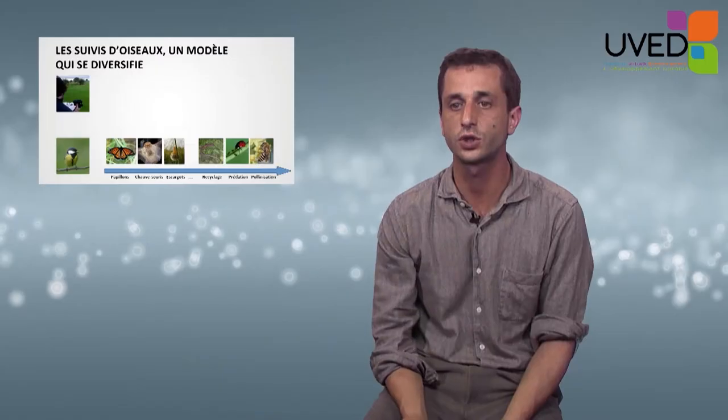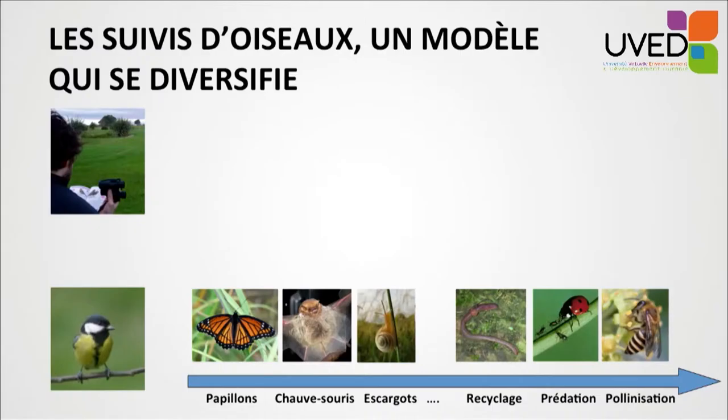This type of monitoring on bird communities is diversified because there are many more organisms being monitored — butterflies, bats, or snails — and also not only in terms of taxonomic groups, but also in terms of the type of monitoring, focusing on ecosystemic functions such as recycling, predation, or pollination.